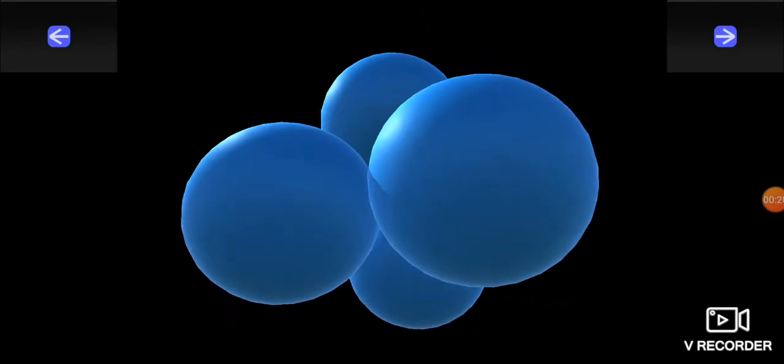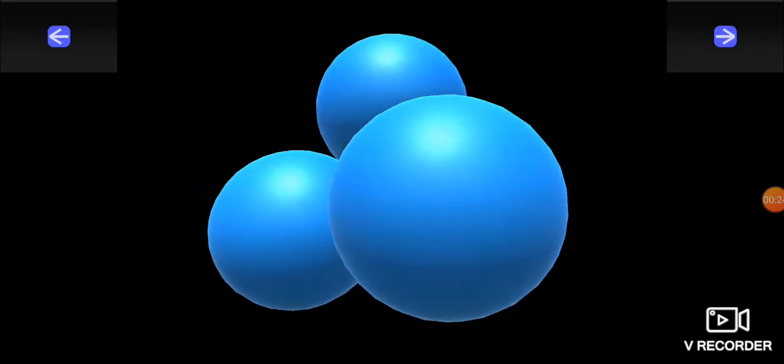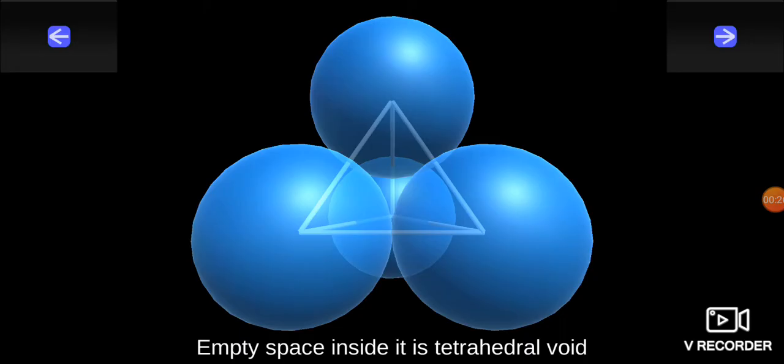Tetra means four and void means the empty space which is left. So, the empty space inside this is considered to be the tetrahedral void.